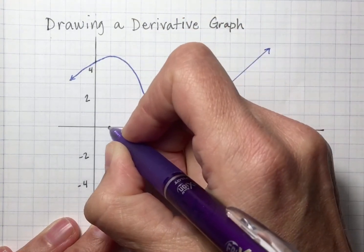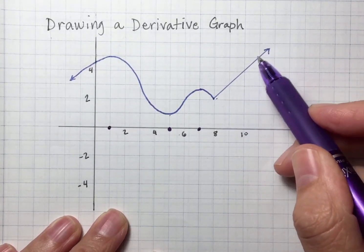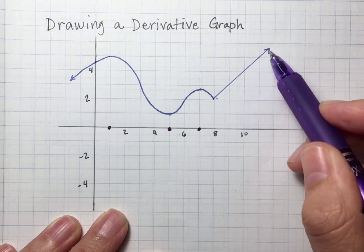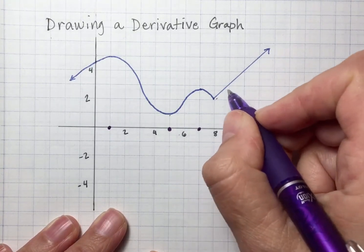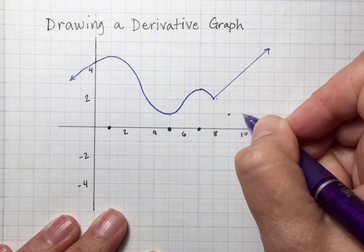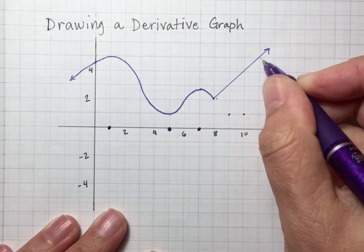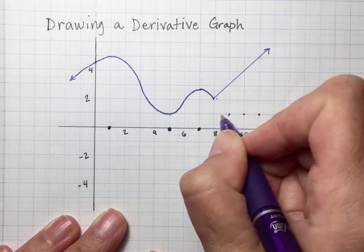I also have a line here that's really convenient. I can just look at that line and go, oh, the slope of that line is 1. So when x is 9, my slope is 1. When x is 10, my slope is still 1. When x is 11, my slope is still 1. So I can just draw a horizontal line here.